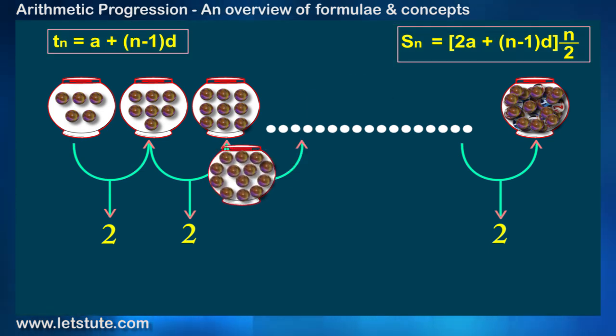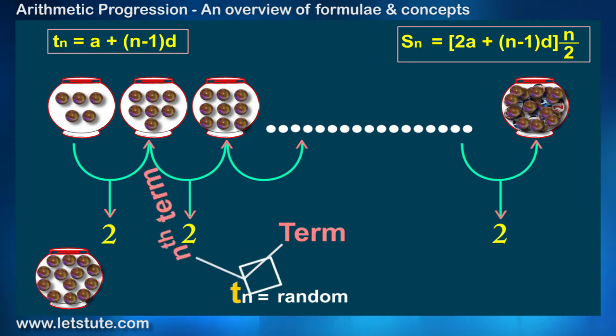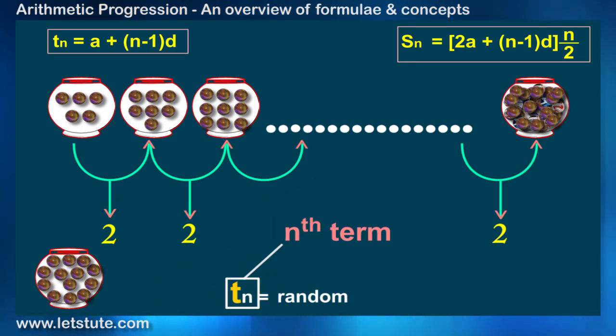Let me randomly select a pot. The number of marbles in the pot is represented by Tn, where n is random. T means term and Tn represents nth term. And I am saying it random because we selected it randomly.